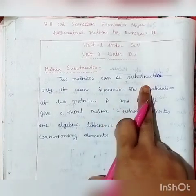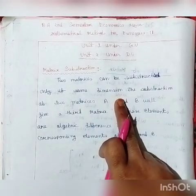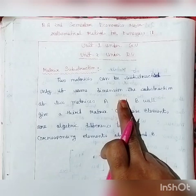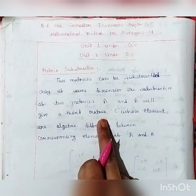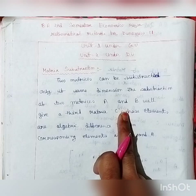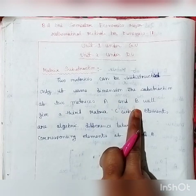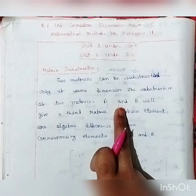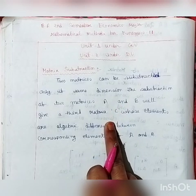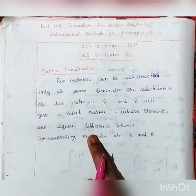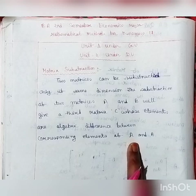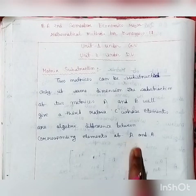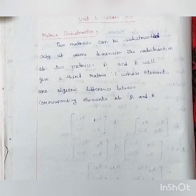Two matrices can be subtracted only if they have the same dimension. The subtraction of two matrices A and B will give a third matrix C. The elements of C are the algebraic difference between corresponding elements of A and B — we subtract corresponding elements to get the third matrix C.